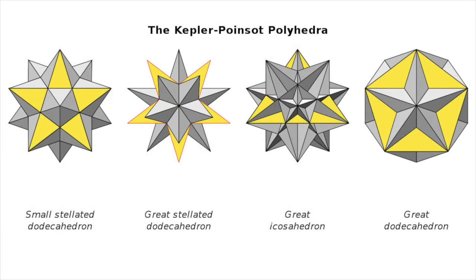A further four regular polyhedrons, the so-called Kepler-Poisson solids, exist that are non-convex. However, the term regular polyhedrons is sometimes used to describe only the Platonic solids.